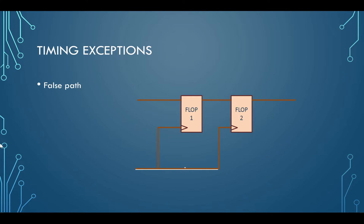The first timing exception we are going to discuss is a false path. A false path refers to a timing path which is not required to be optimized for timing, as it will never be captured in a limited time frame when excited in a normal working situation of the chip. In a normal scenario, the signal launched from a flip-flop has to be captured at another flip-flop in only one clock cycle — this is the setup requirement of any timing path. However, there are certain scenarios where it does not matter at what time the signal originating from the launch flip-flop arrives at the capture flip-flop.